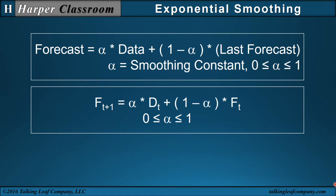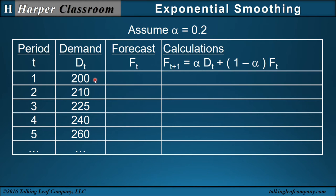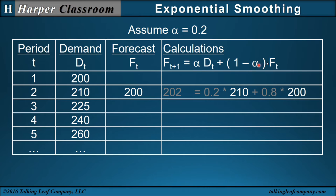Now let's look at calculations. Assume alpha is 0.2, so one minus alpha is 0.8. Assume our data is given — we have five data points. The only thing we don't have to start the method is f. There are a lot of ways to get the initial forecast; to keep it simple, let's just let the data point in time period one be copied down as the forecast in time period two. Now I have a d and an f. I multiply d times alpha (0.2), then f times one minus alpha (0.8), do the arithmetic, and that becomes the forecast for the next time period. That's my first iteration.